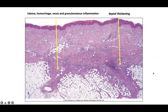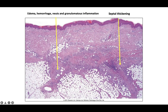At low power, you see septal thickening with lots of inflammation in a septal paniculitis pattern, as well as edema, hemorrhage, neutrophils, and granulomatous inflammation. You can see that the lobules are pretty clean and spared — you can actually see individual adipocytes. It doesn't mean that at the edges you don't have some lobular inflammation, but holistically it's primarily septal.